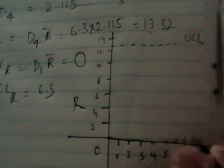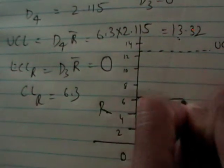Now, you plot the UCL. What is UCL here? 13.32. So, you draw a dotted line. Approximately I am plotting. This is UCL. What is LCL? LCL is 0. So, X axis itself is LCL. What is CL? CL is 6.3. So, again, here you will get this is a solid line. You have constructed the control chart. Now, let us plot the point.